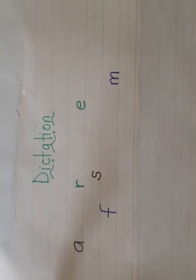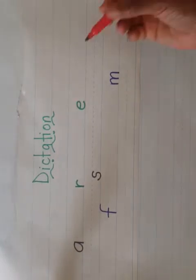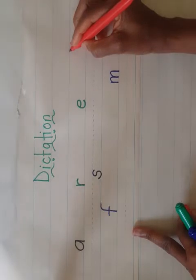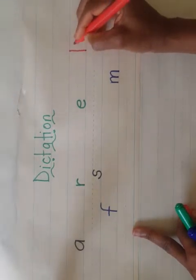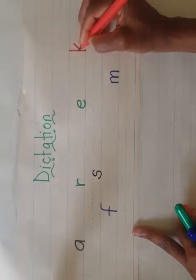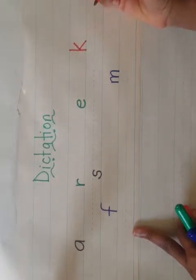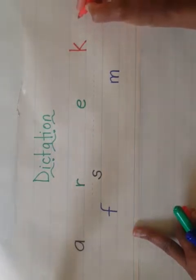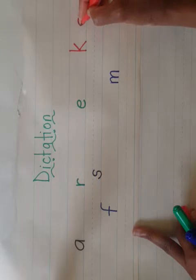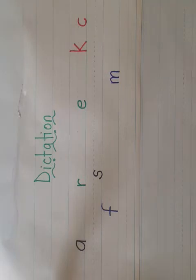What letter makes the 'k' sound? Remember, two letters make the 'k' sound, so you can write the letter K or the letter C — I'm going to accept both. So let's write the letter K: start at the top, come straight down, start in the middle, slant to meet the straight line, and slant back down — that's K. Another letter that makes the 'k' sound is C: go around and down, make a curve — that's a C.